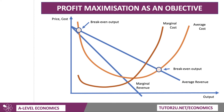Any output in between, they're making a profit, but we're looking for the highest profit. And that occurs at an output where marginal cost equals marginal revenue, which is here. Let's call that Q1 — it's the intersection between marginal cost and marginal revenue.